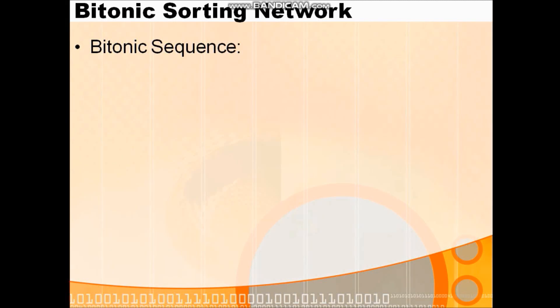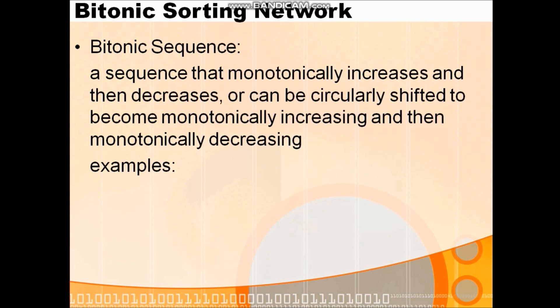Welcome all. Today we are going for the next topic after sorting network: bitonic sorting network. Bitonic sorting network is again a type of network used for sorting, but it is only applicable if the sequence is a bitonic sequence. First, you must understand what a bitonic sequence means — a sequence that monotonically increases and then decreases, or can be circular shifted to become monotonically increasing and then monotonically decreasing.